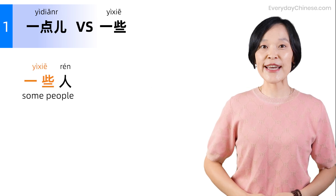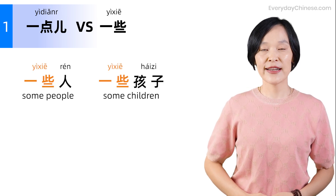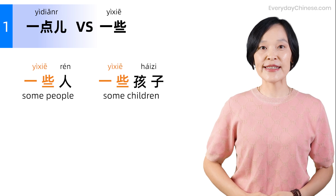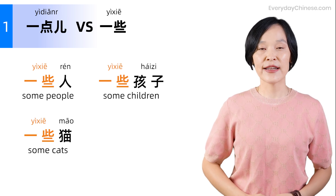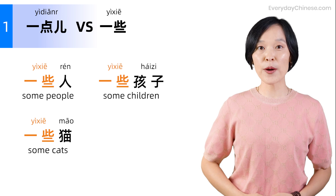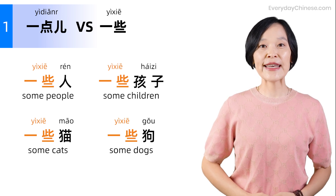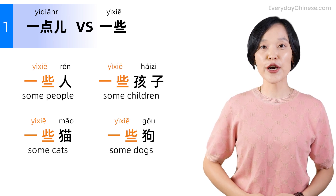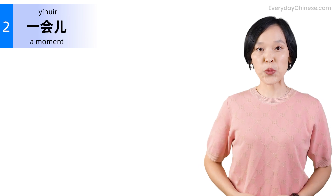Difference two: You can use 一些 to describe people or animals, but you cannot use 一点. For example: 一些人, 一些孩子, 一些猫, 一些狗.